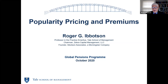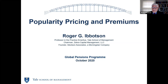So this is the talk — Popularity, Pricing, and Premiums. Jay didn't mention, but John Holmgren did not mention, that I'm also a professor at Yale, now emeritus professor. Some of this stuff actually comes from Ibbotson Associates, where I actually founded that company decades ago — a company that I sold to Morningstar. But here I'm actually in capacity as chairman of Zebra Capital. So I'm really just excited about this topic: popularity, pricing, and premiums.